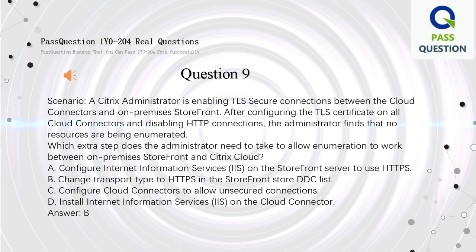Question 9. Scenario: A Citrix Administrator is enabling TLS secure connections between the cloud connectors and on-premises StoreFront. After configuring the TLS certificate on all cloud connectors and disabling HTTP connections, the administrator finds that no resources are being enumerated. Which extra step does the administrator need to take to allow enumeration to work between on-premises StoreFront and Citrix Cloud? A. Configure Internet Information Services (IIS) on the StoreFront server to use HTTPS. B. Change transport type to HTTPS in the StoreFront store DDC list. C. Configure cloud connectors to allow unsecured connections. D. Install Internet Information Services (IIS) on the cloud connector. Answer: B.